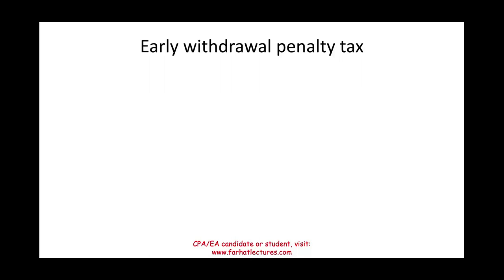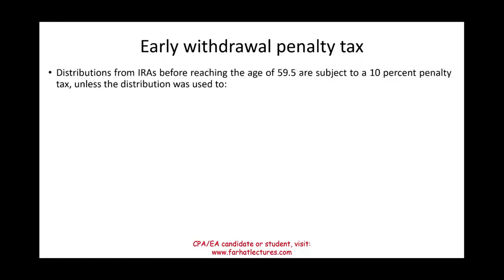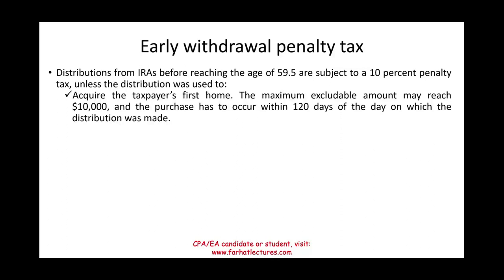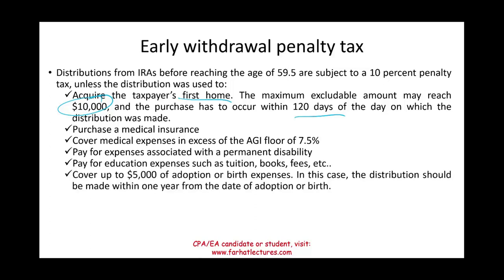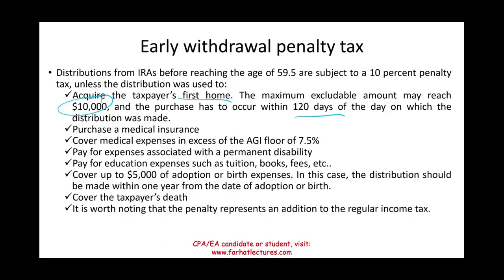What happens if you have an early withdrawal from an IRA — taking money out prematurely? Distributions from an IRA before reaching age 59.5 are subject to a 10% penalty, unless the distribution was used to acquire a first-time home (up to $10,000, and you must buy the home within 120 days), buy medical insurance, cover medical expenses in excess of the adjusted gross income floor of 7.5%, pay expenses associated with a permanent disability, pay for education, or cover up to $5,000 of adoption or birth expenses (the distribution must be made within one year of the adoption or birth). The penalty is in addition to your regular income tax — you pay taxes first, then the penalty.